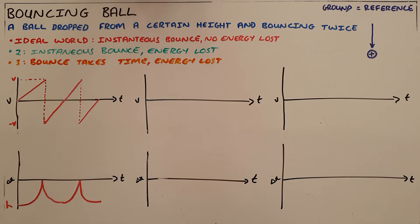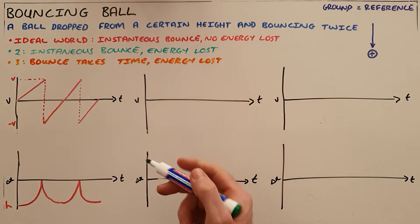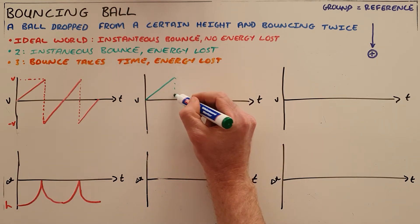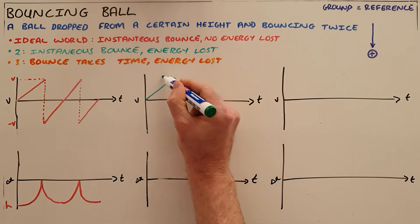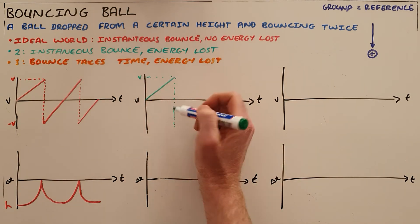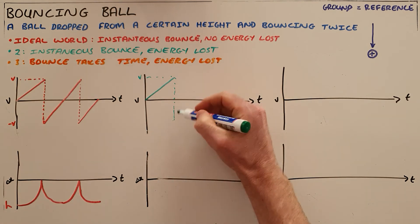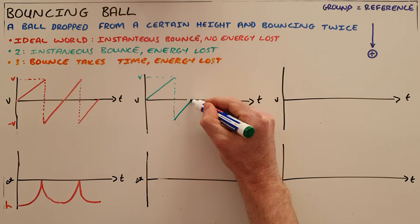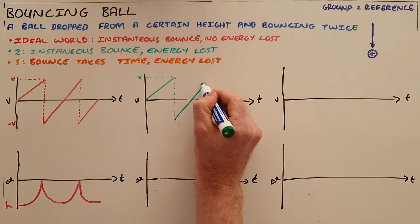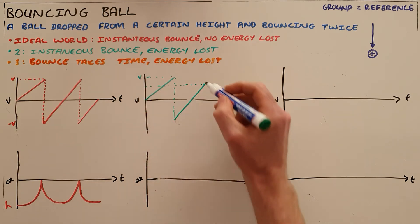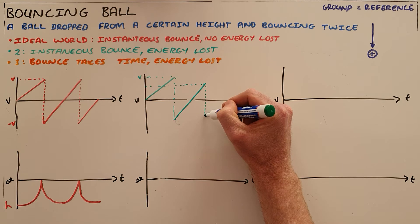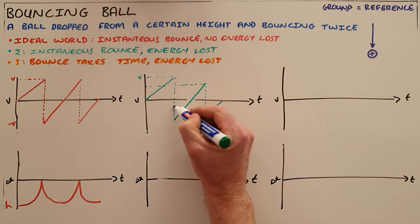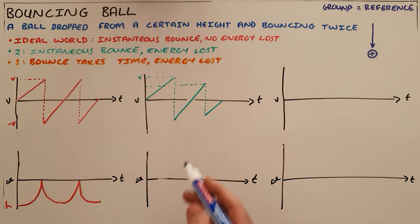The second scenario still has an instantaneous bounce, but now energy is lost at each bounce. The velocity increases as the object falls, and the bounce is instantaneous, showing an instantaneous change in velocity. The difference is that as it bounces it loses energy, so the velocity with which it leaves the ground is not equal to the velocity it arrived with. The velocity just before the second bounce is less than the velocity just before the first bounce, and once again it loses energy before bouncing back up. The velocity is continually decreasing with each bounce.